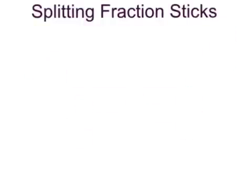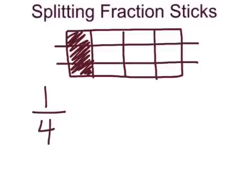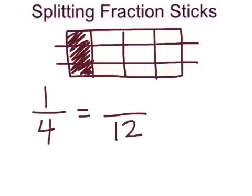Let's look at one more example of how to split a fraction stick to create equivalent fractions. Here is a fraction stick representing one-fourth. If I split this stick using two more lines, I am going to find an equivalent fraction. Counting all the pieces, I get twelve, so my new denominator is going to be twelve. How many of those twelfths are shaded in? When I count, I see three. So one-fourth and three-twelfths are equivalent fractions.